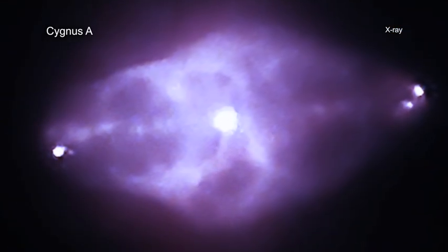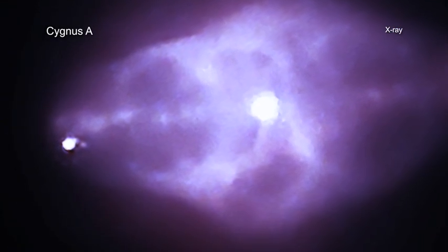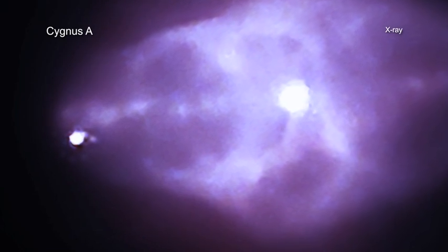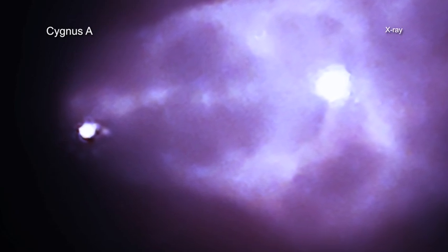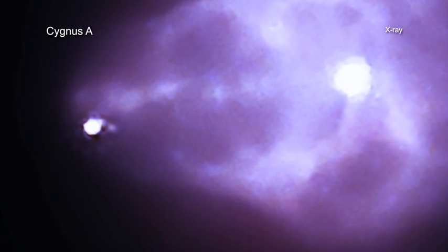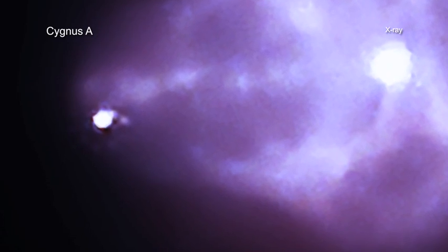In a deep observation that lasted 23 days, scientists used Chandra to create a highly detailed map of both the jet and the intergalactic gas, which they used to track the path of the jets from the black hole.